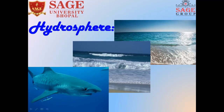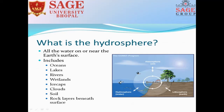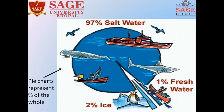Now, what is hydrosphere? All the water on or near the earth's surface is the hydrosphere. It includes ocean, lake, river, wetlands, ice caps, clouds, soil, and rock layers. 71% of earth's surface is covered by water, and the remaining 30% of earth's surface is land. Only 1% of total water is available as fresh water, 2% is in ice form, and the remaining 97% is salt water.